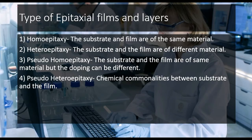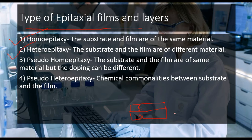Now let's study the types of epitaxial layers. The first is homoepitaxy: if the substrate is silicon, then the film grown on it is also silicon — that is homoepitaxy. The reverse is heteroepitaxy: if the substrate is gallium arsenide, then the film is silicon, so substrate and film are of different materials.